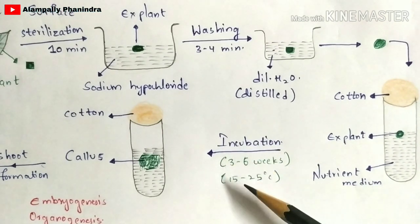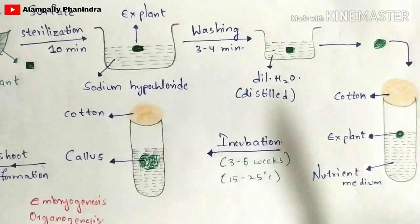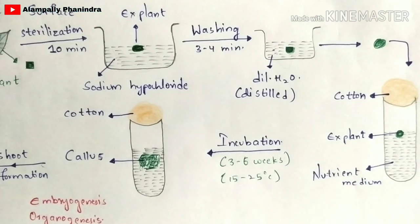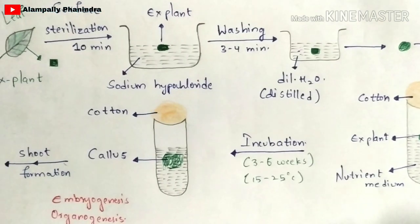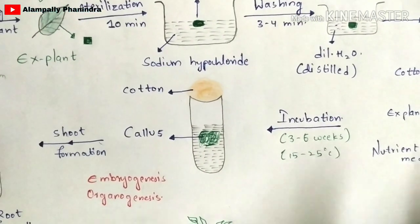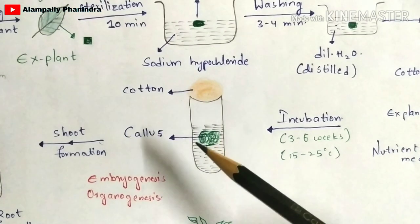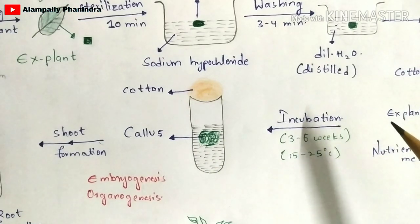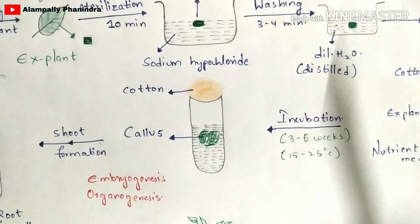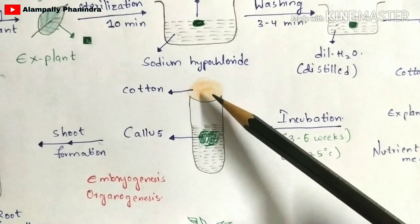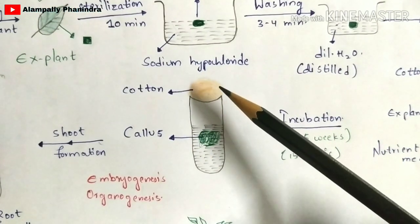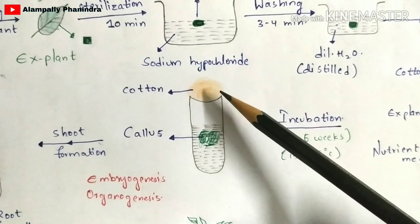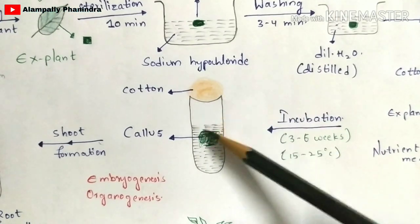Finally, there will be a formation of callous. Callous is a mass or group of cells mainly formed by the rapid division of the explant when it is exposed to the nutrient medium. Make sure the cotton is not removed — it should remain tightly packed so that no bacteria enter the tube.